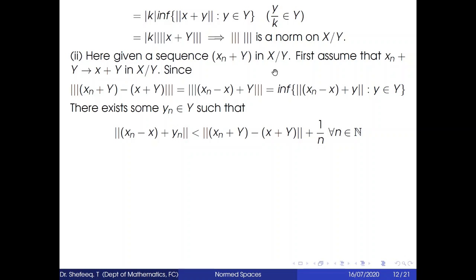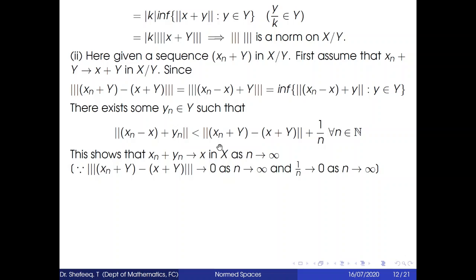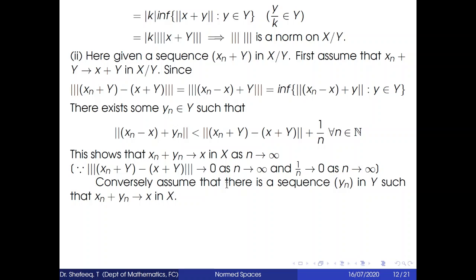Since x_n + Y converges to x + Y, the quotient norm goes to 0 as n → ∞, and 1/n → 0. So ‖x_n + y_n − x‖ → 0 as n → ∞. This shows that x_n + y_n converges to x in X.